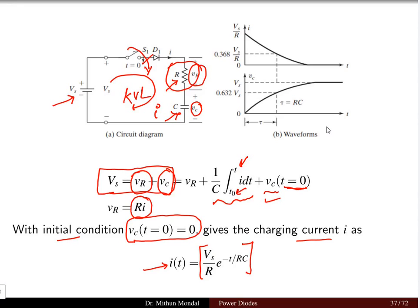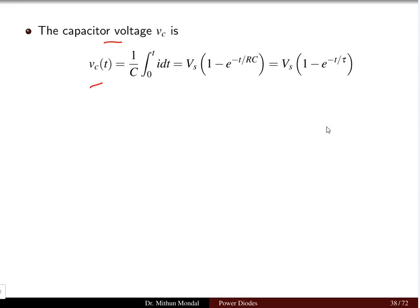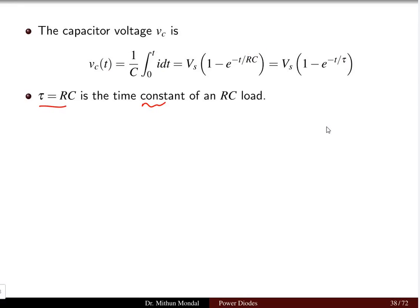The solution to this differential equation gives a current that is exponentially decaying, with a negative exponent — meaning the current decays exponentially with maximum magnitude VS/R at time t=0. As time increases the current decreases from its maximum value toward zero. The capacitor voltage as a function of time is VC(t) = VS(1 − e^(−t/RC)). The time constant of the RC network is τ = RC, so the RC factor can be replaced with τ.